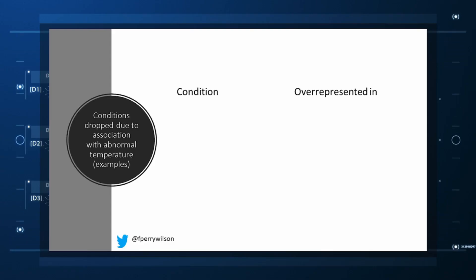What you are left with is a normal population – at least a population of people who don't have a condition that seems to meaningfully affect temperature. So, who got dropped?